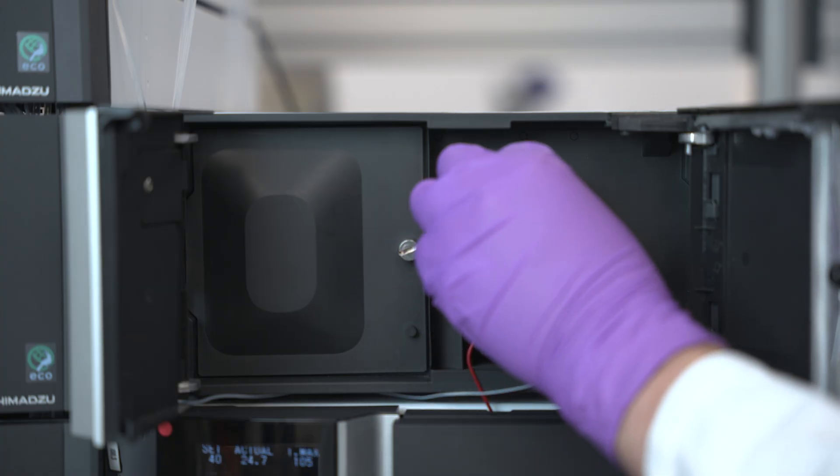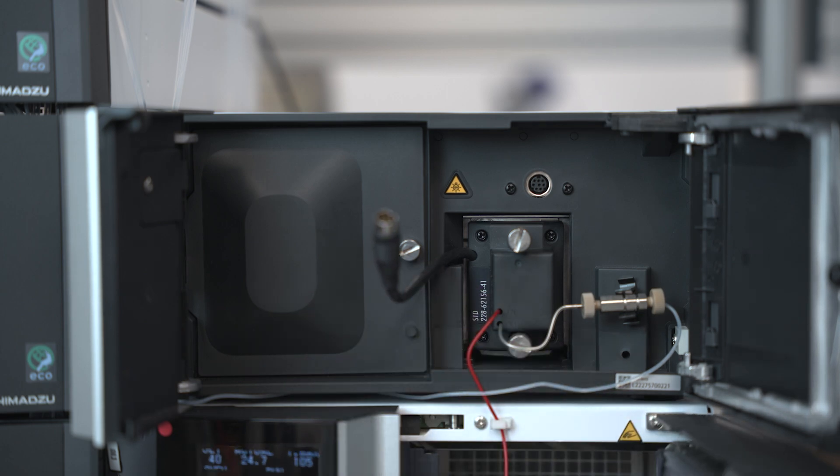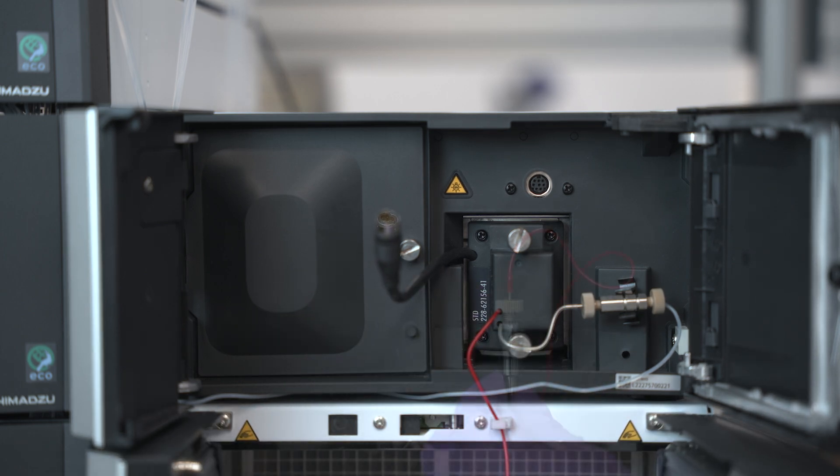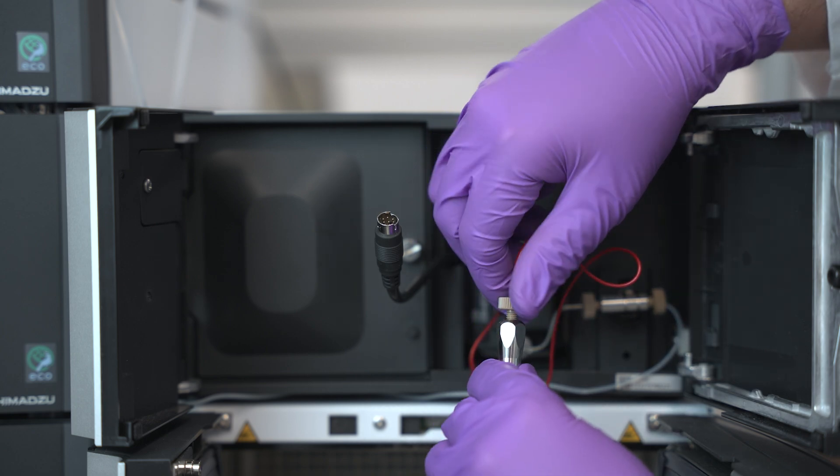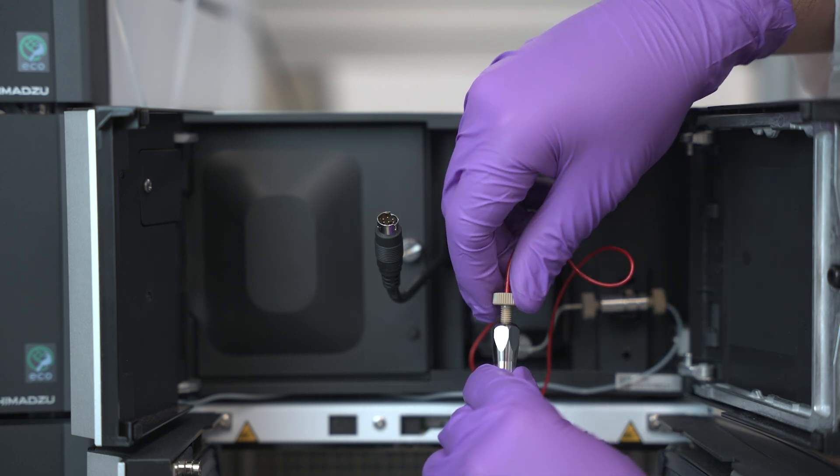Next, detach the connector cable from the face of the main body. Remove the inlet and outlet tubing from the column side from the union.